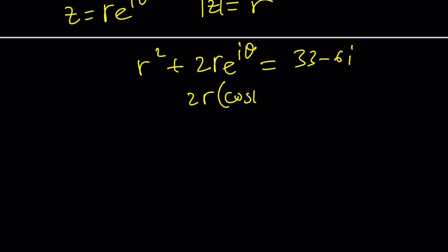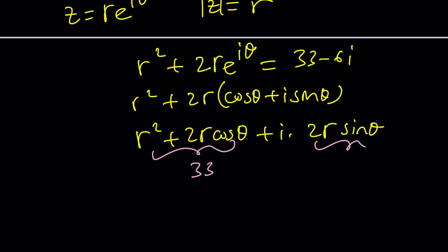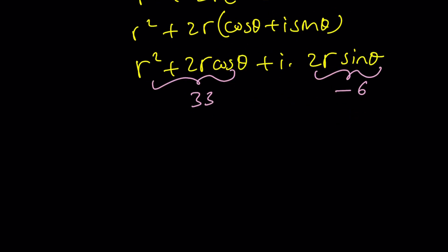This part is going to be like this: cosine θ plus i sine θ. Actually it's not super challenging, I think. And then we're going to go ahead and distribute: 2r cosine θ plus i times 2r sine θ. So here's what we need to have: the real part is 33, so this needs to be 33, and this needs to be negative 6, which means r sine θ is negative 3.